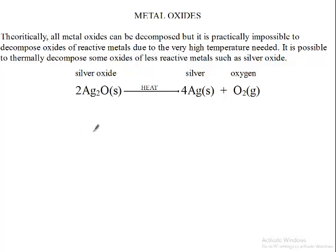So when you take, let's say, potassium oxide K2O, when you take sodium oxide Na2O, these are oxides of highly reactive metals. They are very difficult to break down. They require extremely high temperatures.